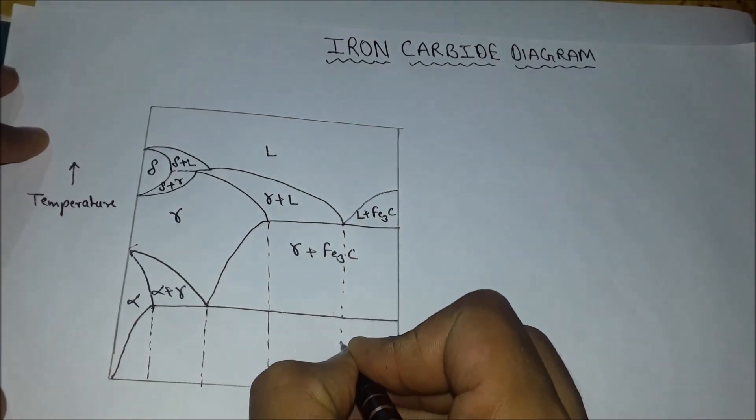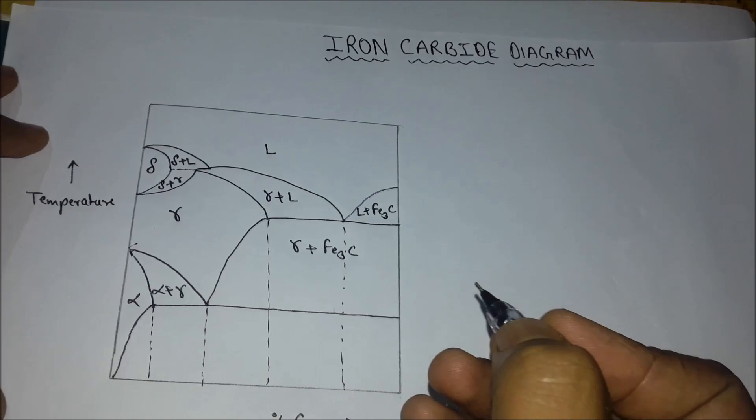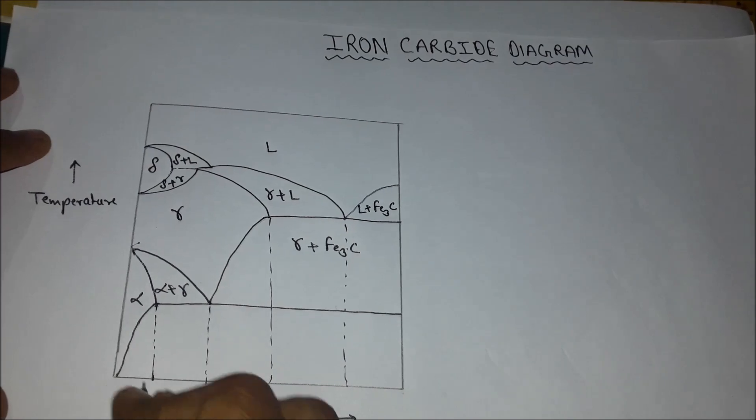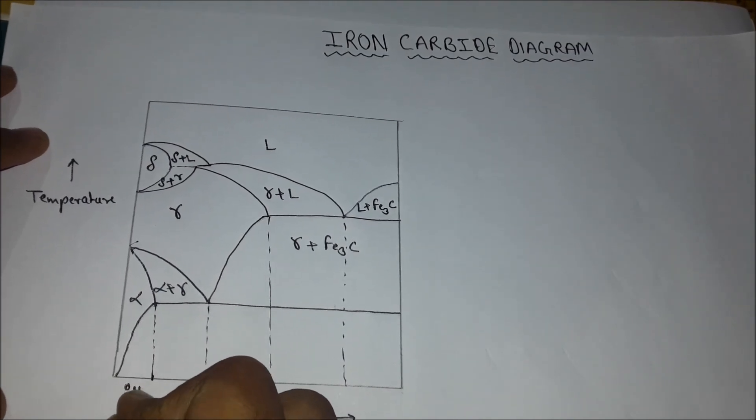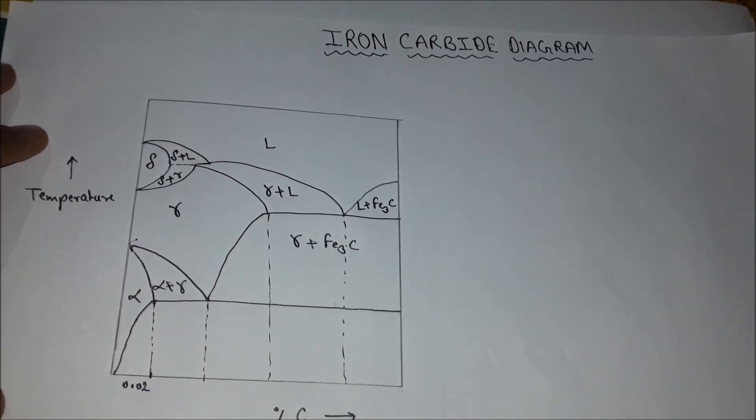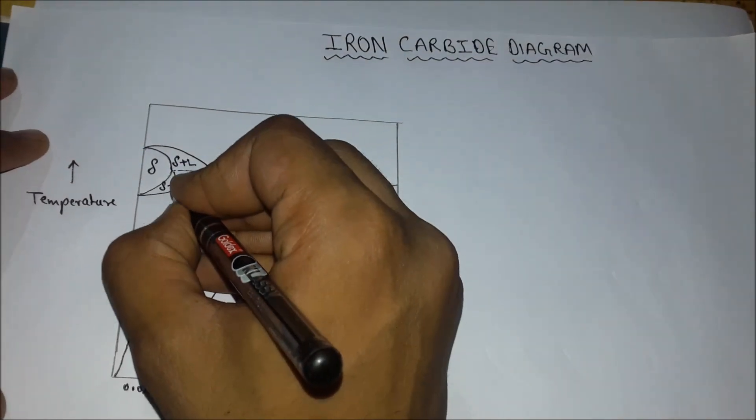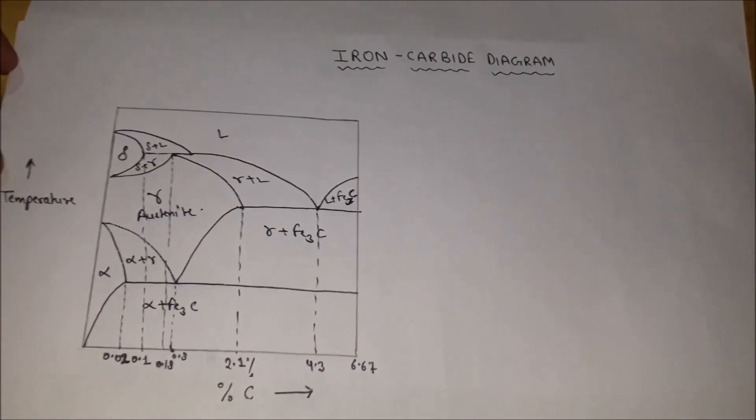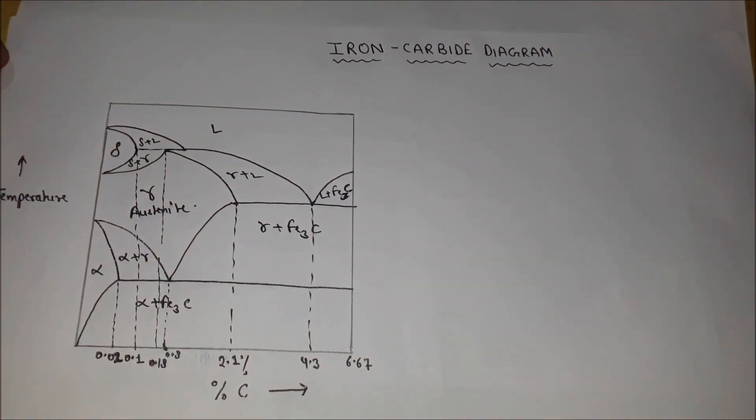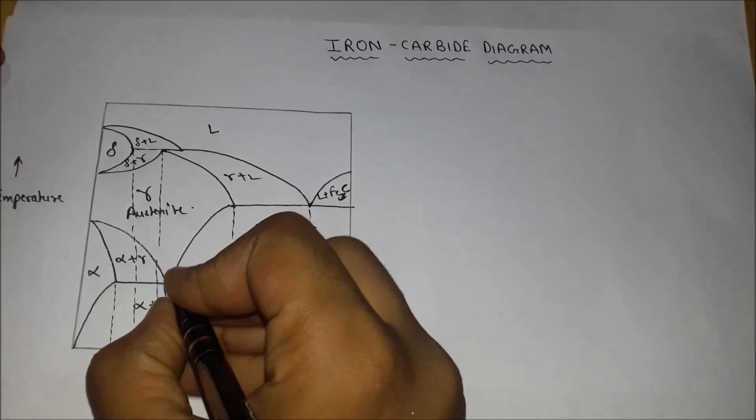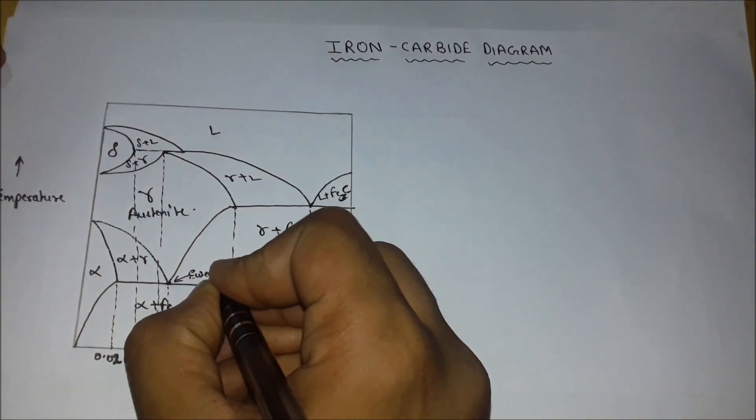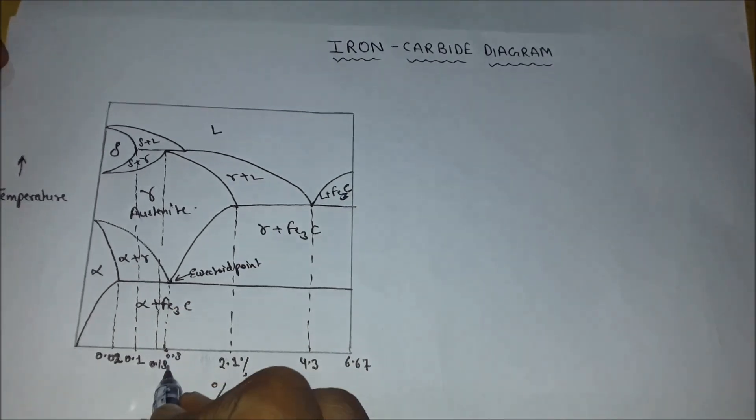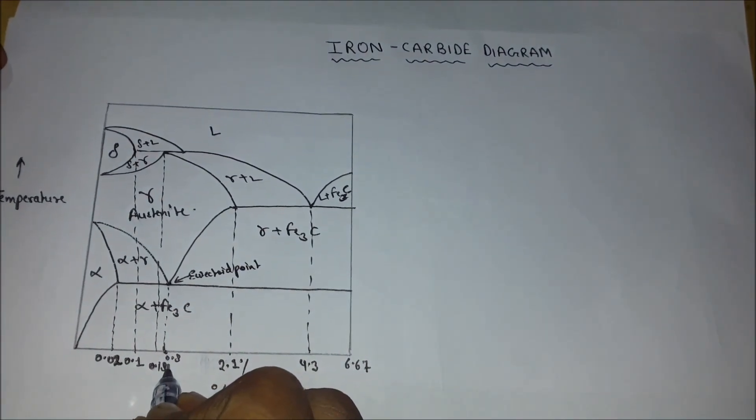Now we will write the percentage of carbon in different phases. So in alpha phase, it is 0.02%. Then in pure delta phase, this point is known as eutectoid point. And here the corresponding percentage of carbon's solubility is 0.8%.